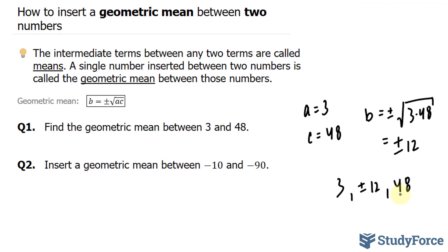In question two, we're asked the same thing, just worded differently. Insert a geometric mean between negative 10 and negative 90.